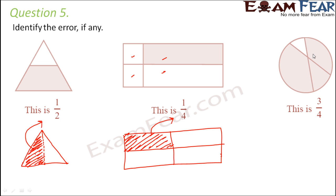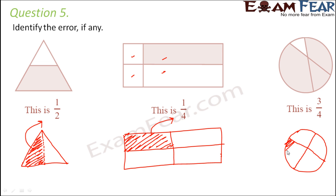The third diagram is labeled 3 by 4, with 3 parts shaded, but all 4 parts are not equal, so we cannot call it 3 by 4. To correctly show 3 by 4 we divide the rectangle into 4 equal parts, and then 3 parts out of 4 equal parts would be 3 by 4. That shaded region would correctly represent 3 by 4.